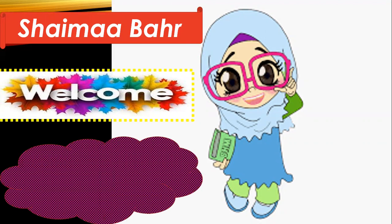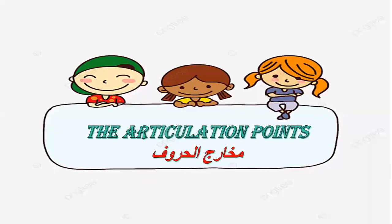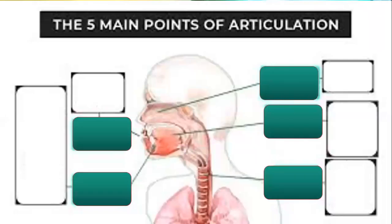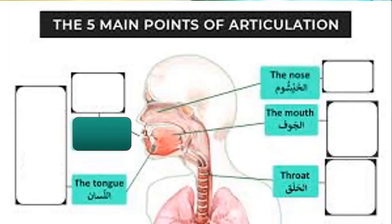Today inshallah we will study together a new Tajweed lesson. The lesson today is about the articulation points — Makharaj al-Haroof. In the last class, we started together: there are five main points of articulation: al-Halq (the throat), al-Jawf (empty space), al-Lisan (the tongue), al-Khayshum (the nose), and ash-Shafatan (the lips).